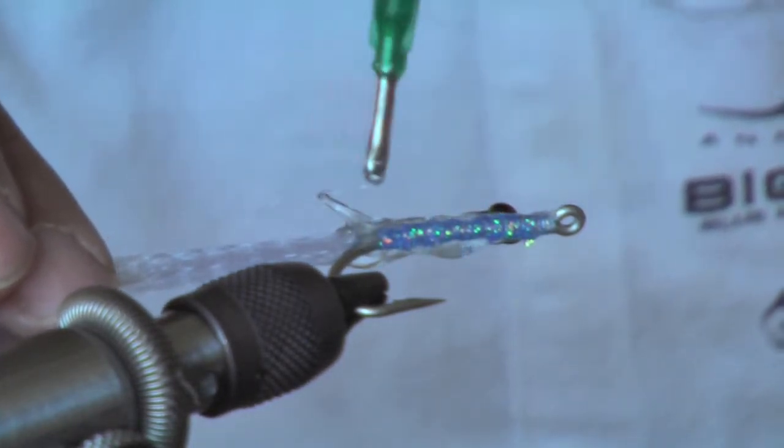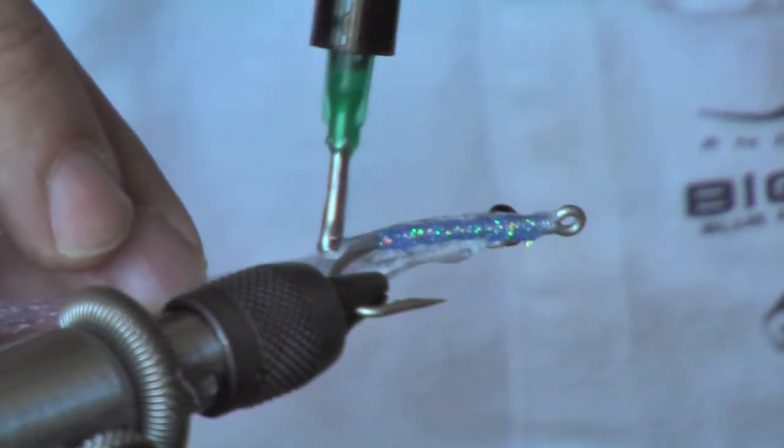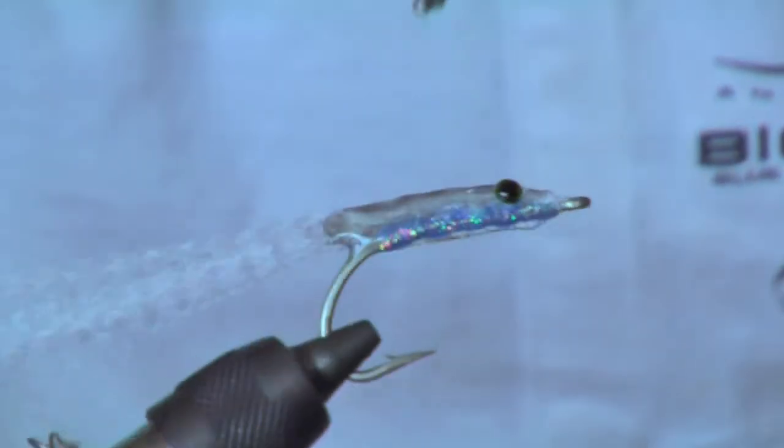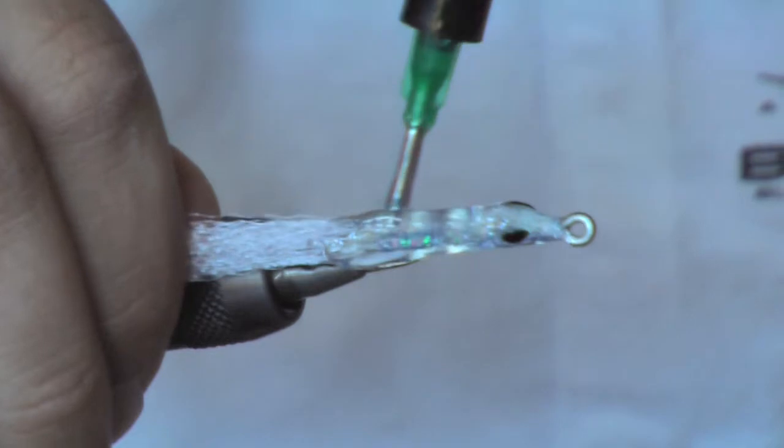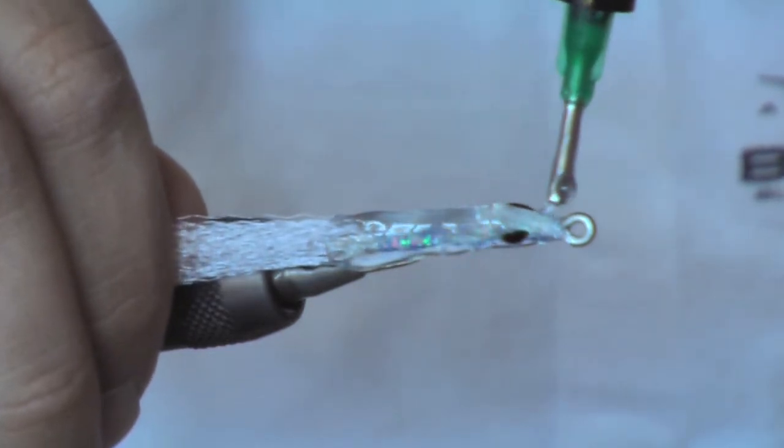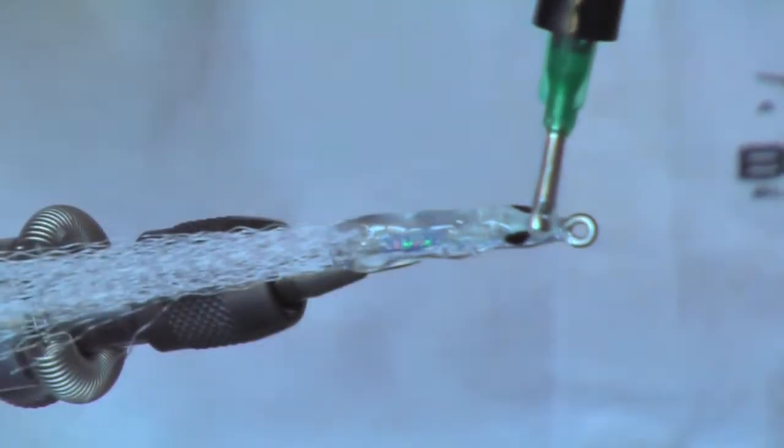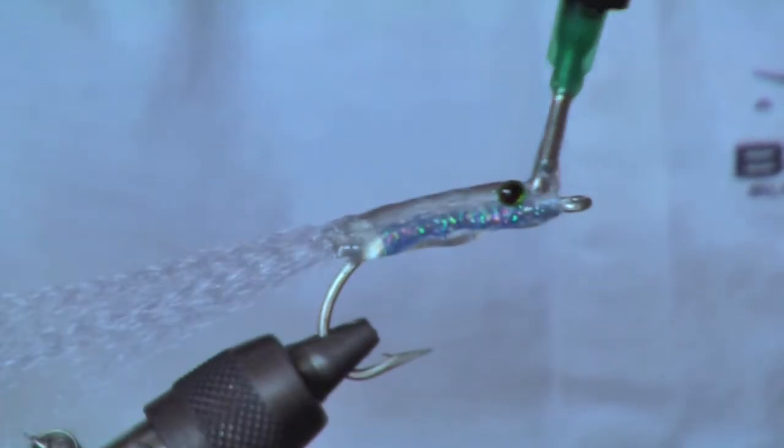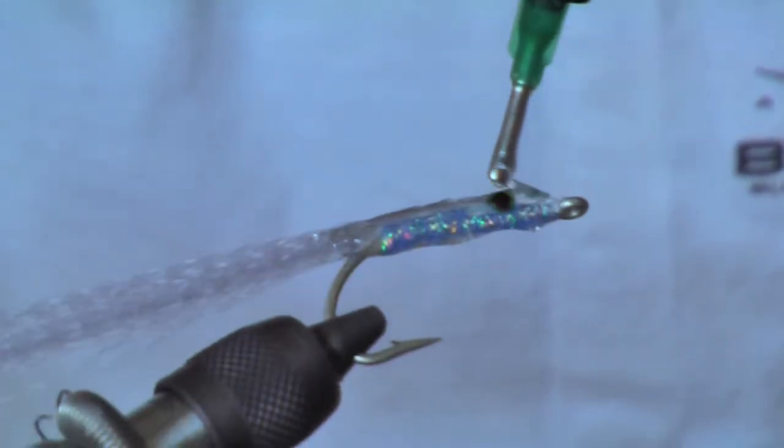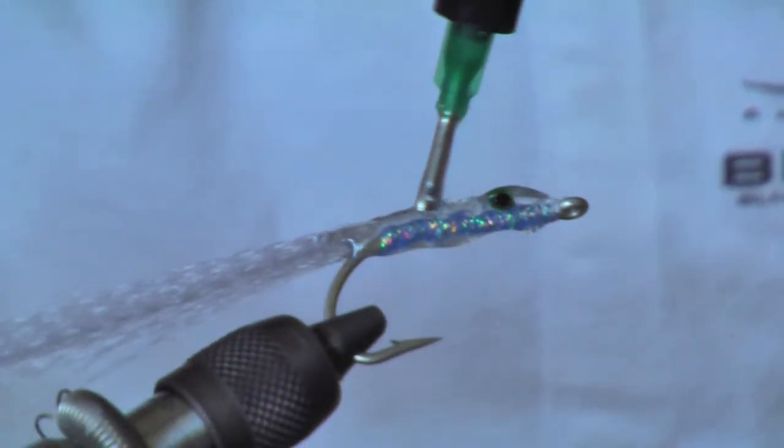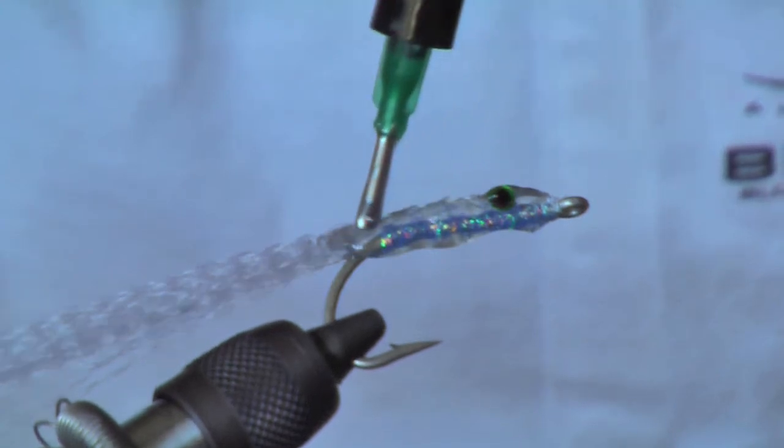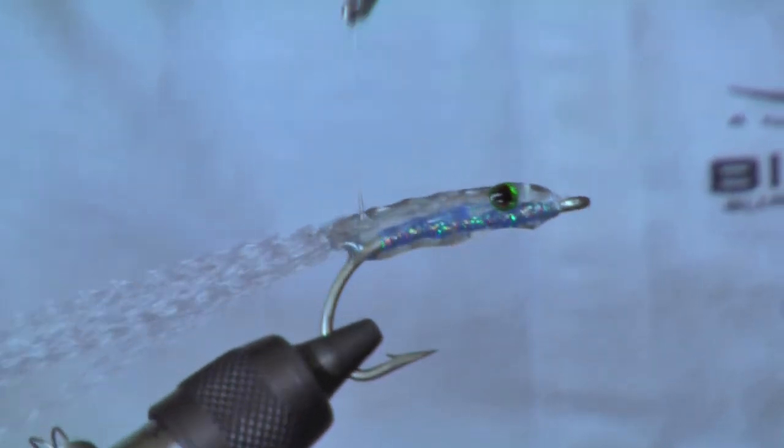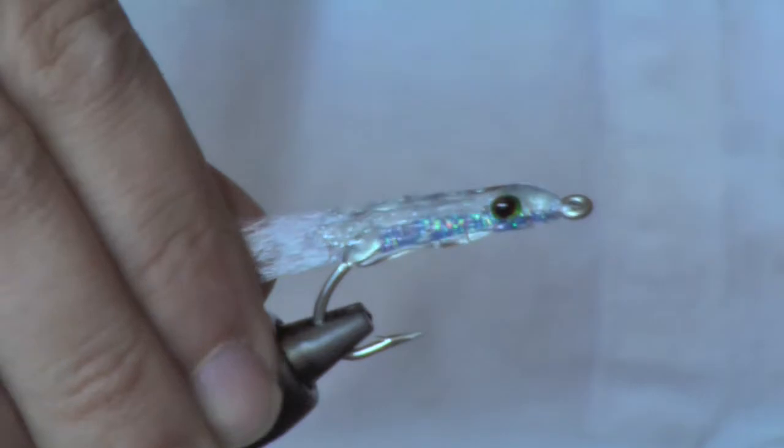Surf candies are material intensive—they take a lot of material to build. If you're building them this large with this flexible, you're probably going to get around 30 surf candies out of one syringe.